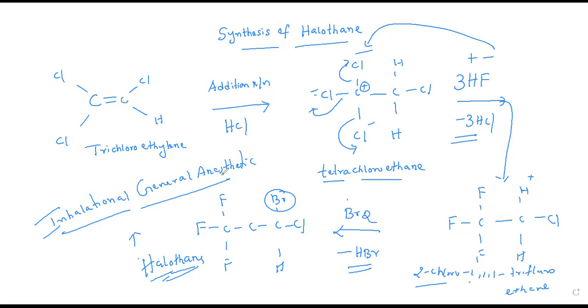And do remember this halothane is non-irritant, non-inflammable, and volatile liquid. It may cause bronchodilation which is more preferable in asthma patients. And this is the only halogenated general anesthetic which contains a bromine atom.